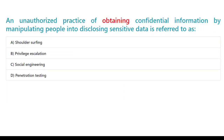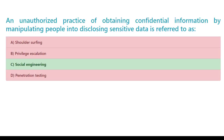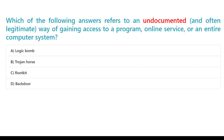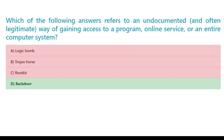An unauthorized practice of obtaining confidential information by manipulating people into disclosing sensitive data is referred to as: A. Shoulder surfing. B. Privilege escalation. C. Social engineering. D. Penetration testing. The correct answer is D. Backdoor.